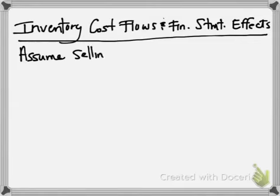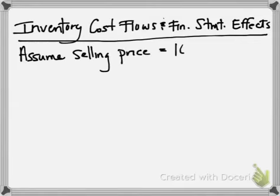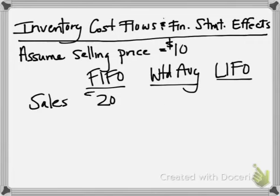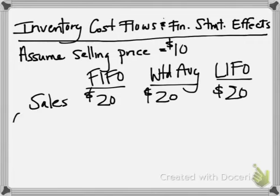Let's look at how the income statement is affected by the choice of cost flow assumption. Assuming that for those two units we sold, the selling price is $10, then in each case — whether we chose FIFO, weighted average, or LIFO — our sales amount, the revenue we would have recorded, would have been $20: two units times a $10 selling price.